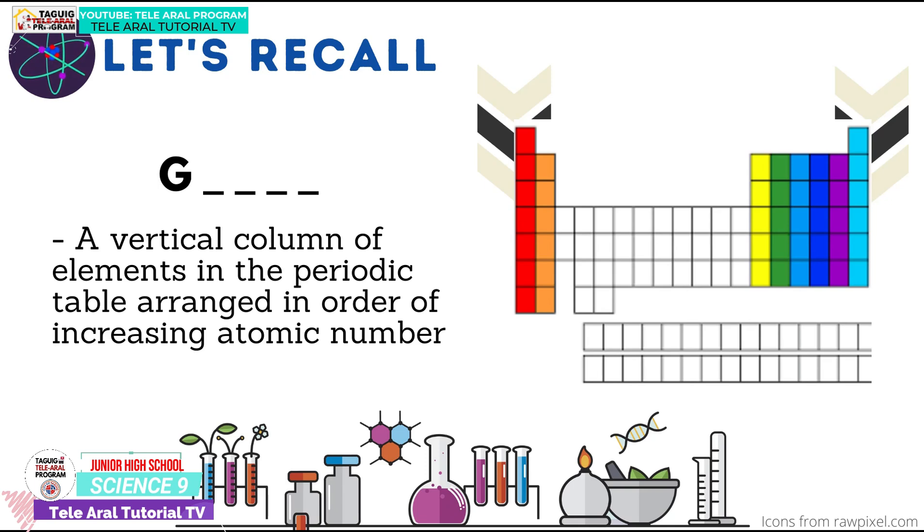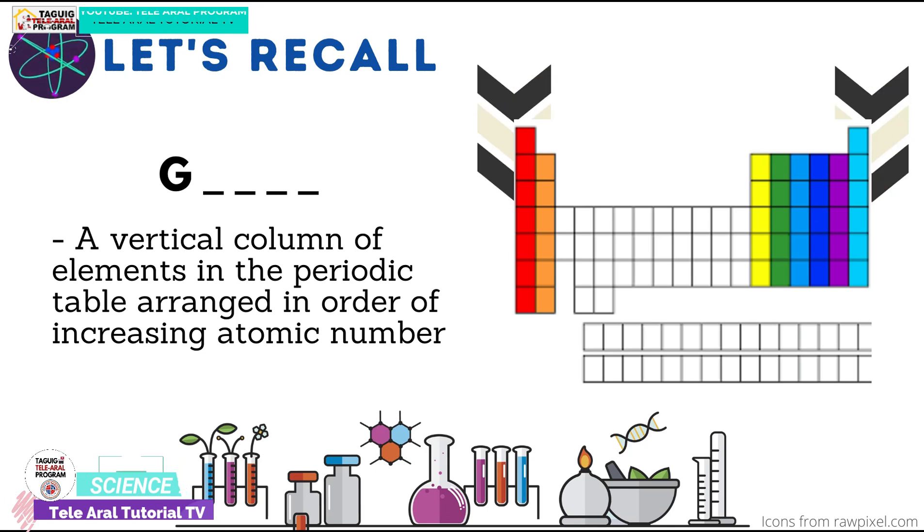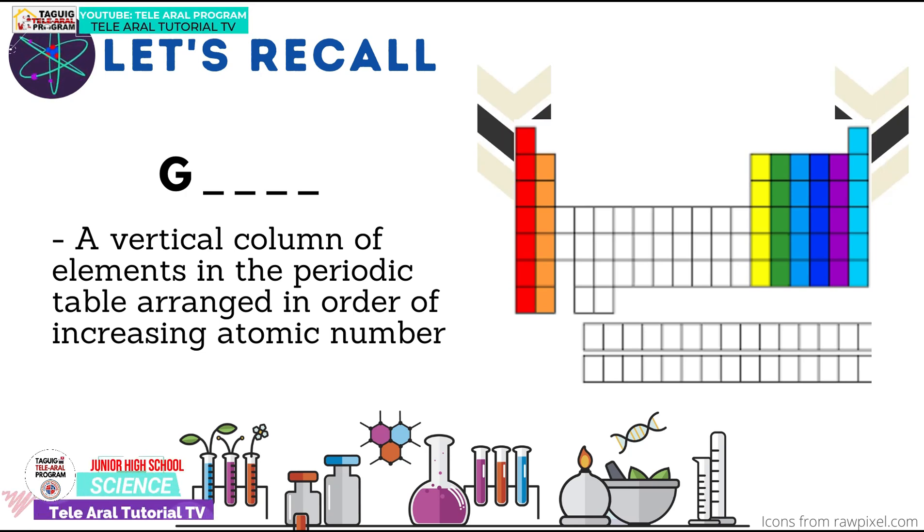Lastly, what is the vertical column of elements in the periodic table arranged in order of increasing atomic number? Good job! That's the group. It is also called family. Very good, everyone! Don't forget those concepts because we will be utilizing them in our lesson for today.